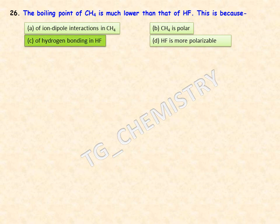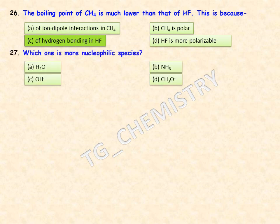Which is the more nucleophilic species among water, ammonia, OH⁻, and CH₃O⁻? The methoxide ion (CH₃O⁻) is the more nucleophilic species among these four.